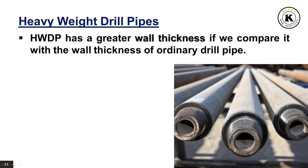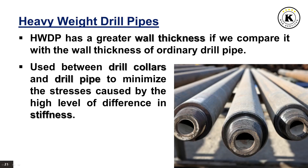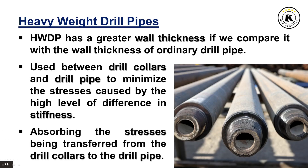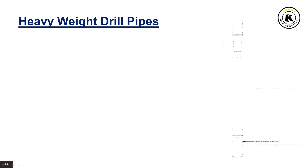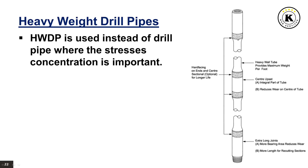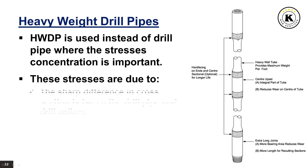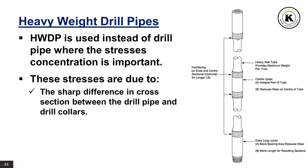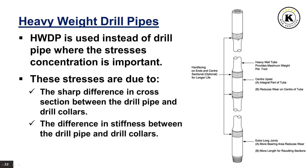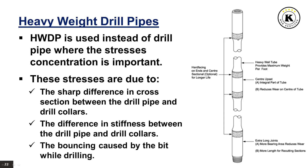Heavyweight drill pipe has a greater wall thickness compared with ordinary drill pipe. It is used between drill collars and drill pipe to minimize the stresses caused by the high level of difference in stiffness. The main benefit is absorbing stresses being transferred from the drill collars to the drill pipe. These stresses are due to the sharp difference in cross-section and stiffness between the drill pipe and drill collars, as well as bouncing caused by the bit while drilling.